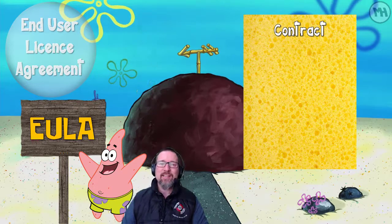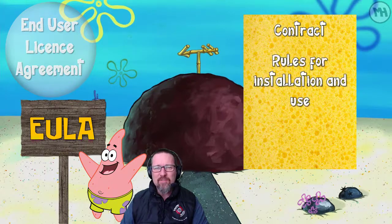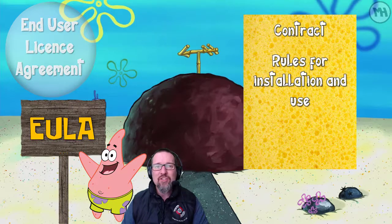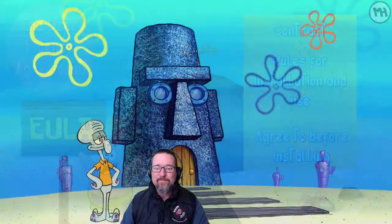The EULA — the End User License Agreement — is kind of like a contract between you and the developers of the software. It has the rules for the installation and the use of the software, and you need to agree to it before you can install it.